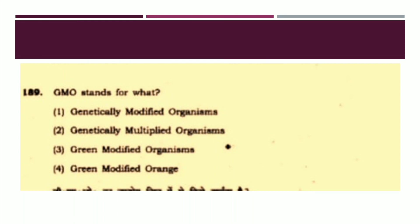Our first question is: GMO stands for what? The options are: Genetically Modified Organism, Genetically Multiplied Organism, Green Modified Organism, or Green Modified Orange. This is a very easy question. The right answer is Option number one: Genetically Modified Organisms.